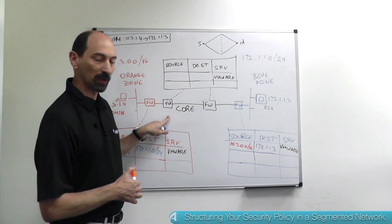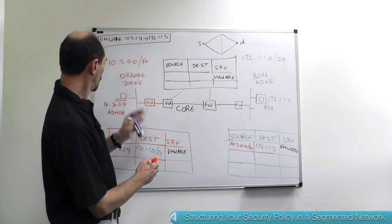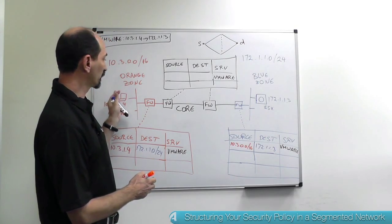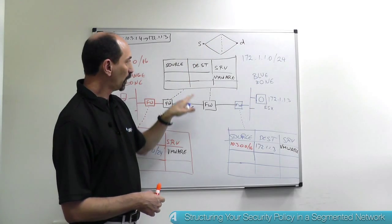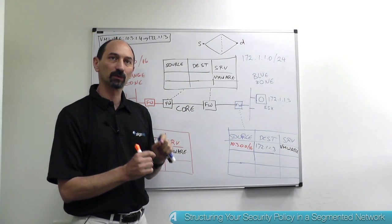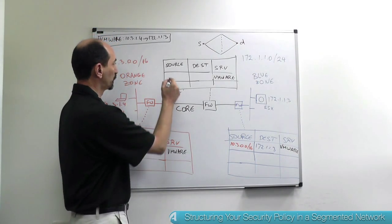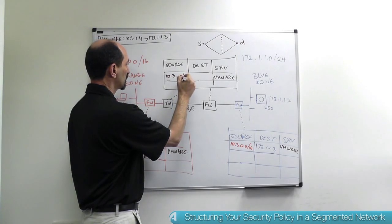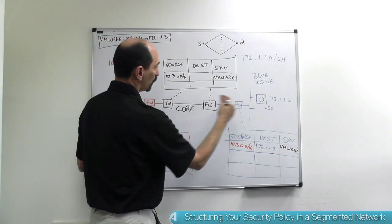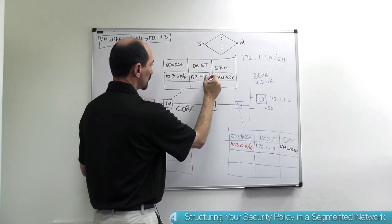And now when you have to look at the intermediate firewalls protecting the core network, so they're not close to the administration, to the orange zone, and they're not close to the blue zone either. They're in the fat middle. Over here, you don't want to put specific rules. You want to put broad rules just with zone to zone traffic. So you'd put the whole source zone 10.3.0.0/16 and the whole blue zone 172.1.1.0/24.